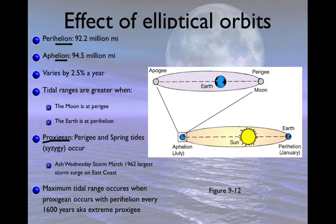When these effects are additive, it can be a really big deal. A term you need to know is proxygean. Proxygean occurs when you have perigee — the Moon closest to the Earth — at the same time as syzygy, meaning the Sun, Moon, and Earth are all in alignment. In 1962, a huge storm surge on Ash Wednesday produced tides greater than 16 feet higher than normal, partly due to proxygean conditions along with a storm. An even rarer event, sometimes called a super proxygean, occurs when you have perigee, syzygy, and perihelion all at once. This only occurs every 1,600 years, and maximum tidal ranges can be 30 feet higher than normal in some places. The next occurrence should be around the year 3000.